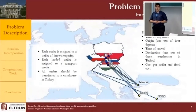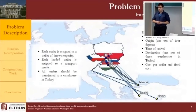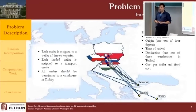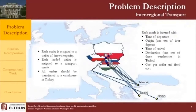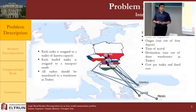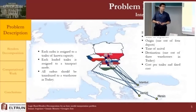After all orders are loaded to a depot in Europe, we proceed to the international transport stage, in which each order is assigned to a trailer of known capacity and this loaded trailer is assigned to a transport mode. Each transport mode features a time of departure, an origin depot in central and eastern Europe, a time of arrival, a destination warehouse in Turkey, a cost per used trailer, and a fixed cost considered in the objective function.